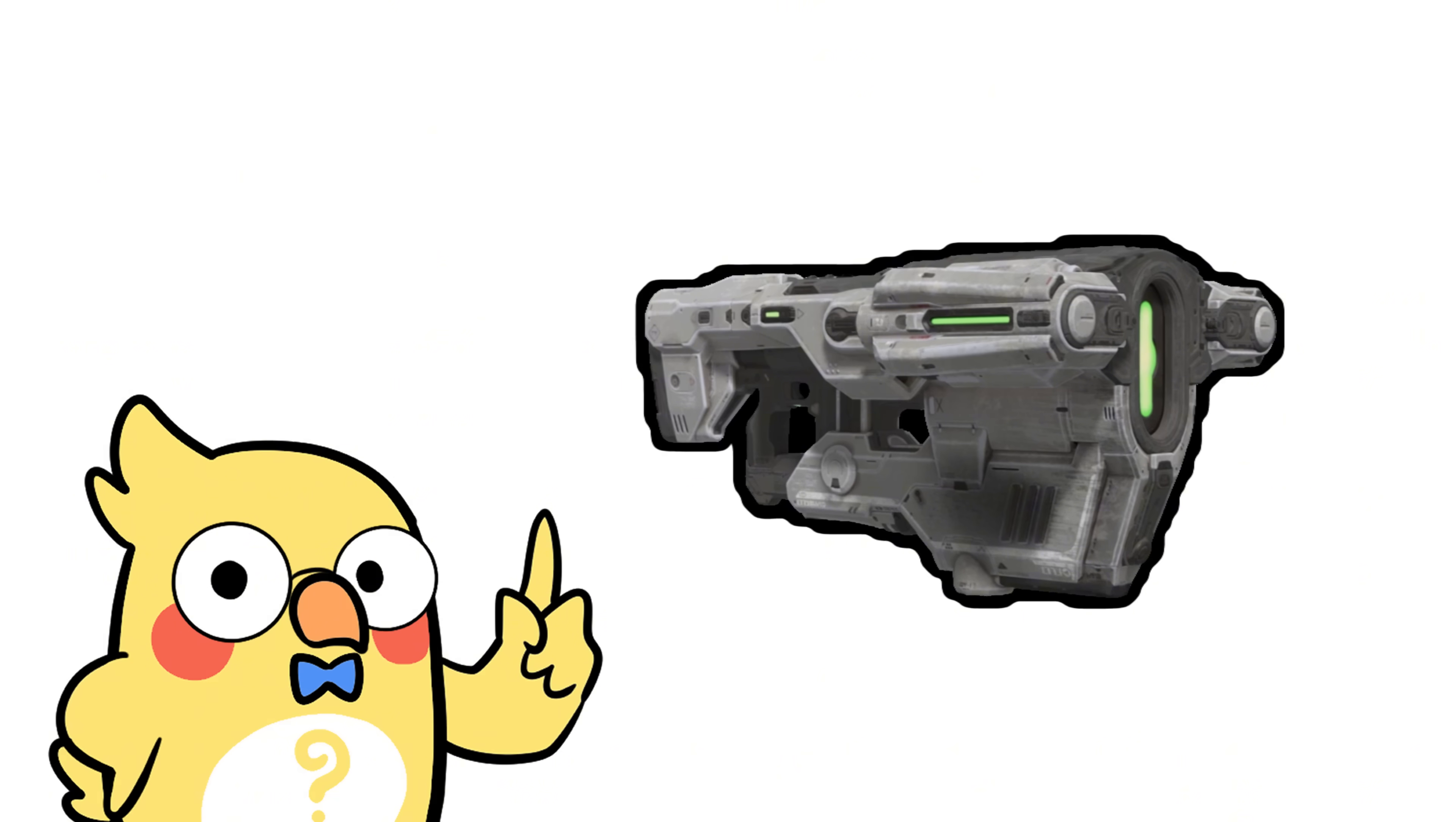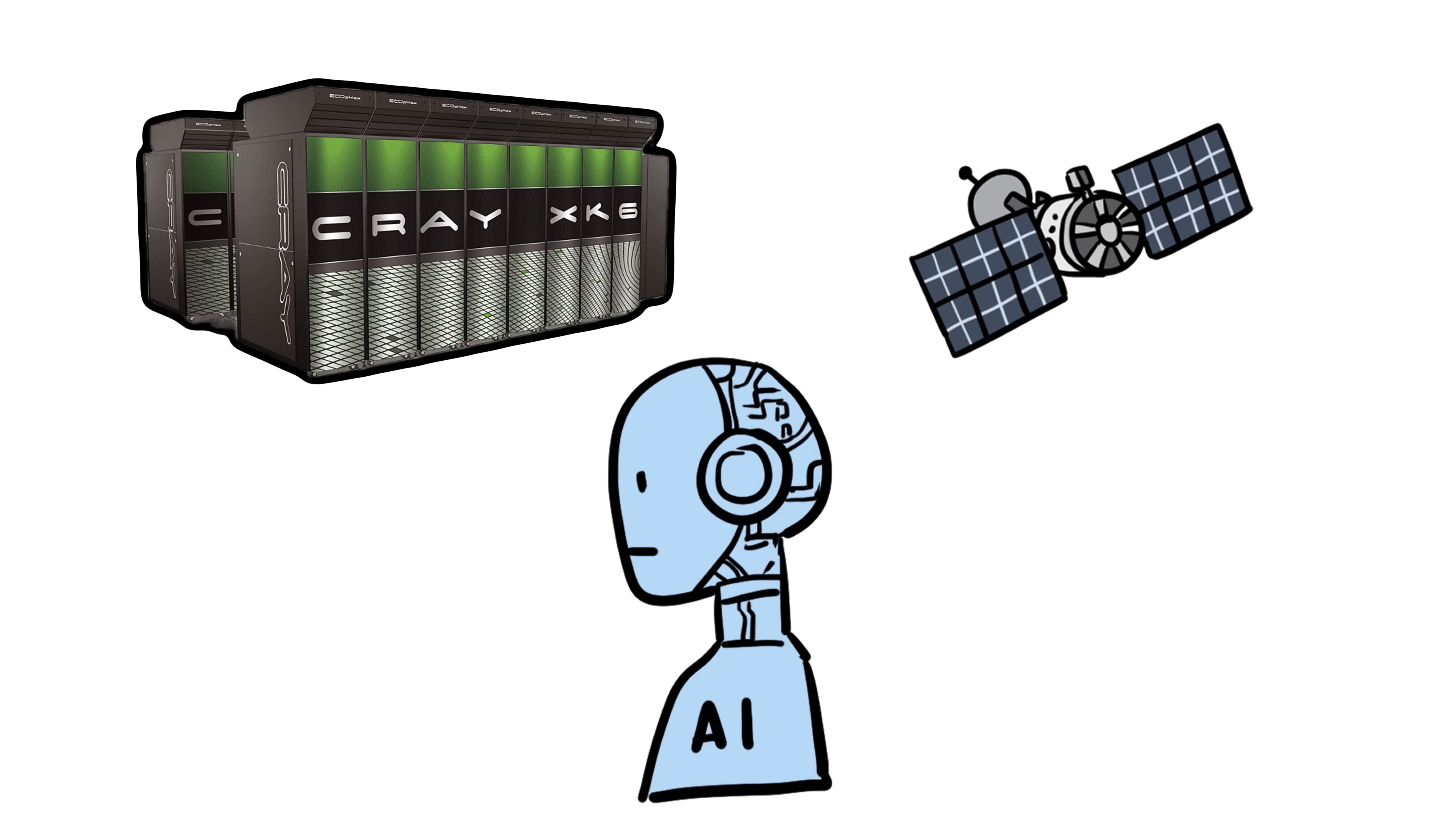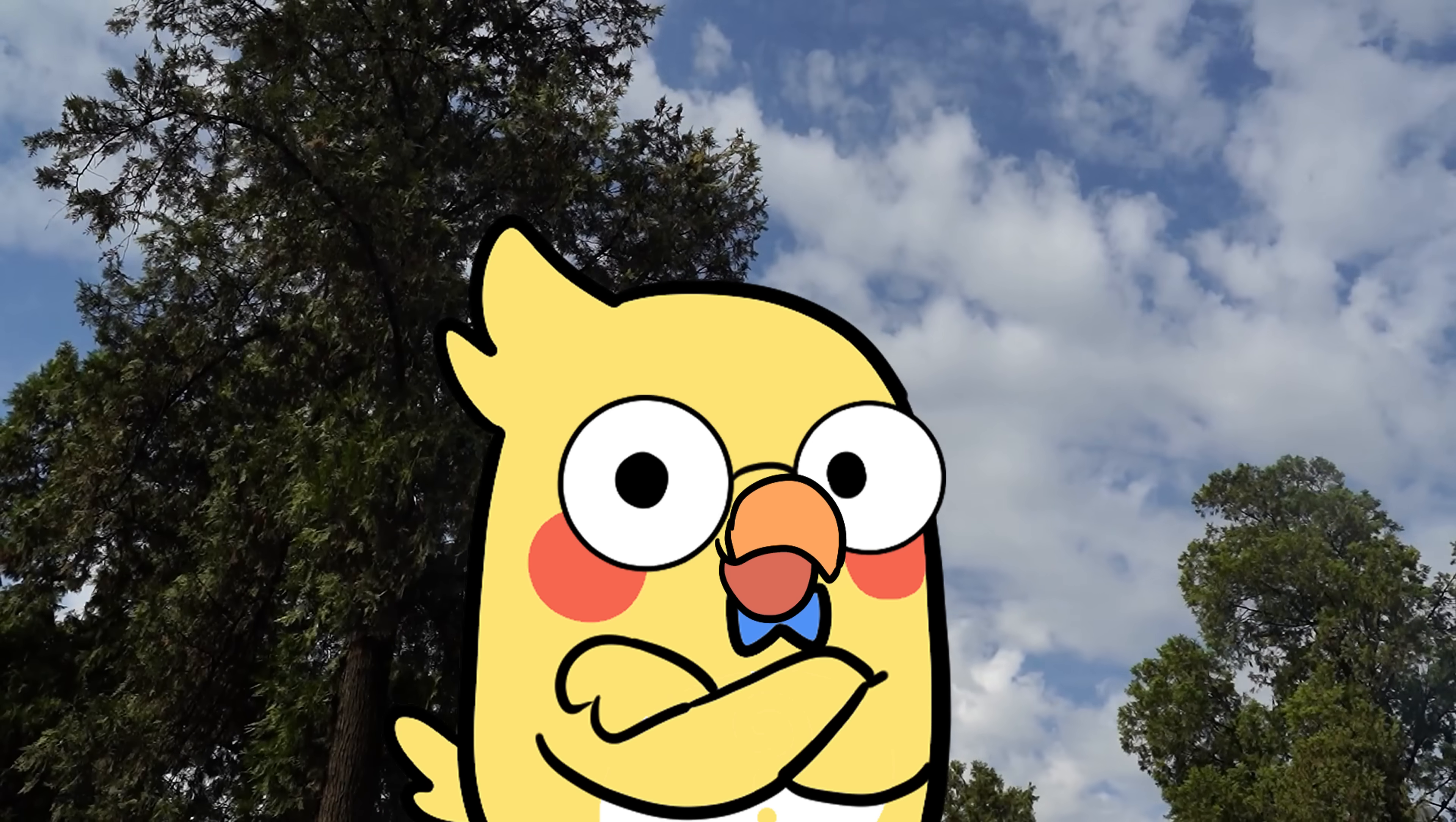And in modern times, they bring in the big guns, supercomputers that run simulations, satellite imagery, machine learning algorithms that try to predict underground geometry. We're not just guessing anymore, we're guessing with style.